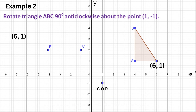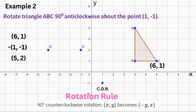Point C is (6, 1). Subtract the center: 6 − 1 = 5, and 1 − (−1) = 2. Next, apply the rotation rule — swap the positions and change the sign of the first number — so (5, 2) becomes (−2, 5).